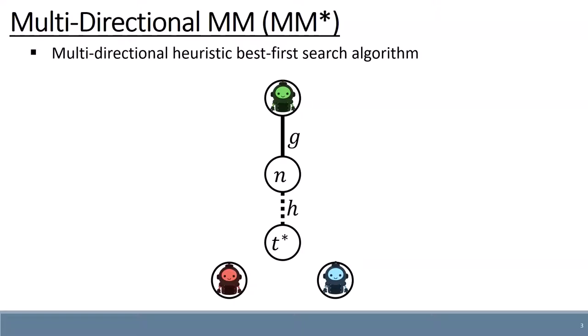While in classic heuristic search, the heuristic function estimates the cost to the goal location, here we cannot estimate this cost, as we do not know where is the optimal meeting location.